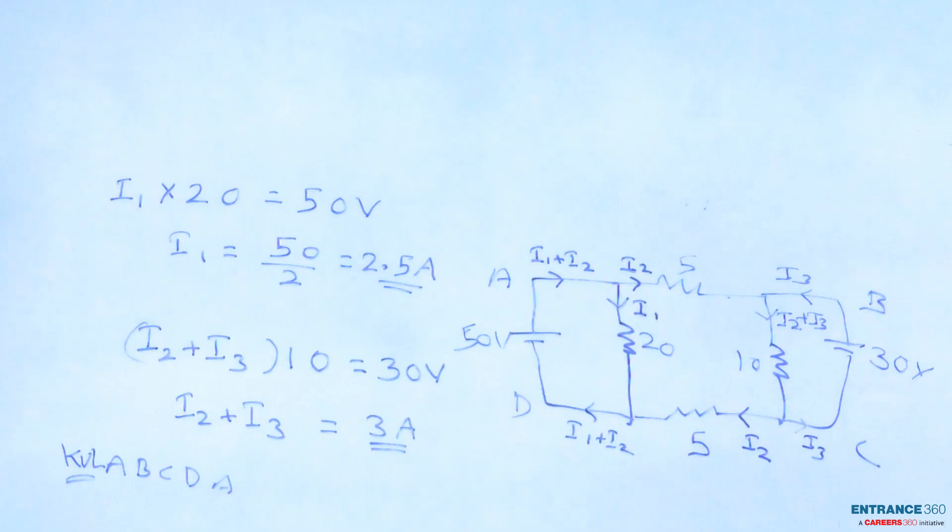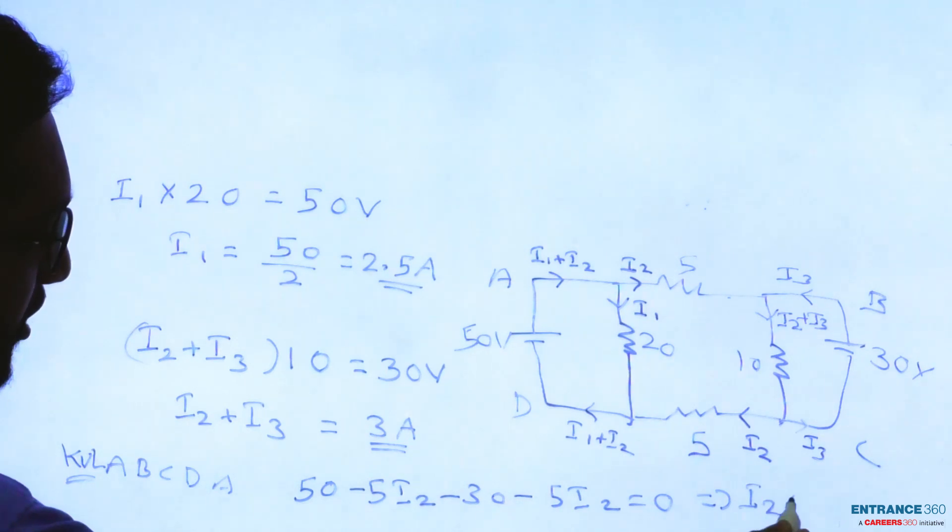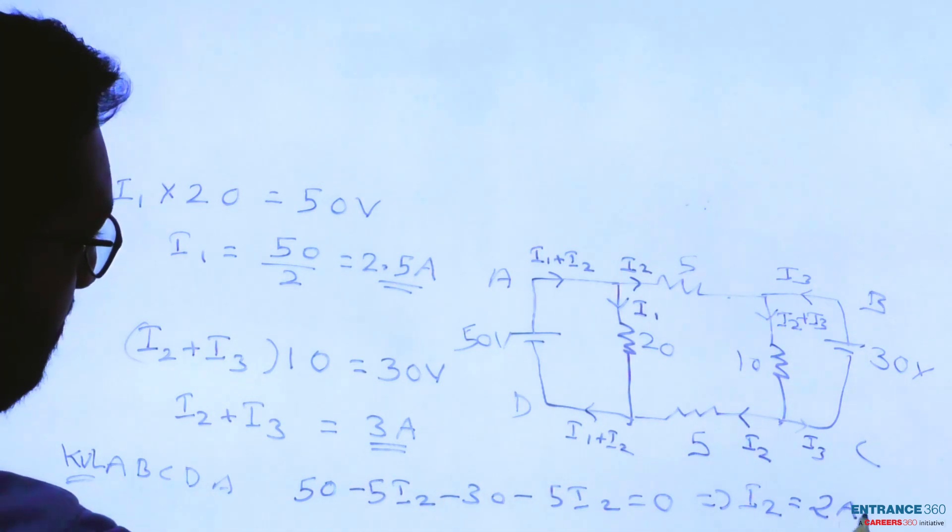So again write the equation here: 50 minus 5 I2 minus 30 minus 5 I2 equals zero. From here, I2 will be 50 minus 30 is 20, minus 5 I2 minus 5 I2 is minus 10 I2, which implies I2 equals 2 ampere.